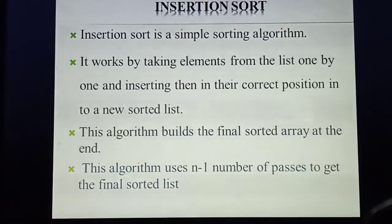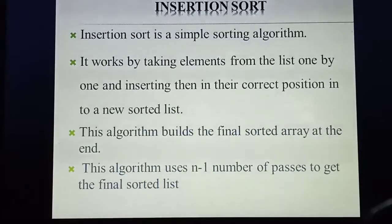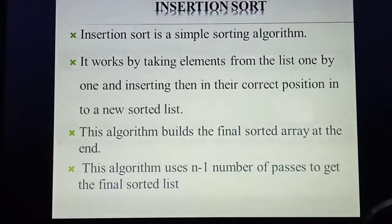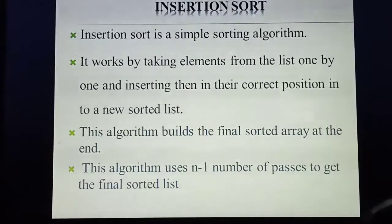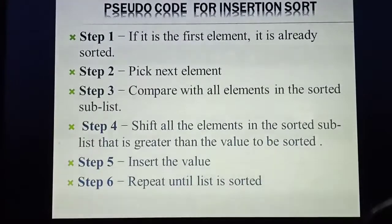So what are the points you need to write for insertion sort? It is a simple sorting algorithm. It takes elements one by one and inserts each element in the correct position order. This process continues until you get the sorted array. How many passes are required? n minus 1 — meaning if 10 elements are there, 9 passes are required. If an algorithm question is asked, first write the definition and explanation, then write the pseudocode.